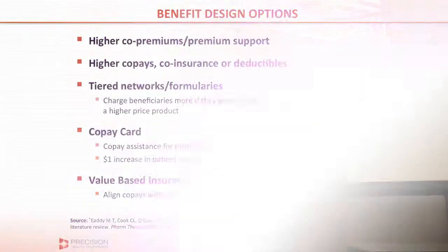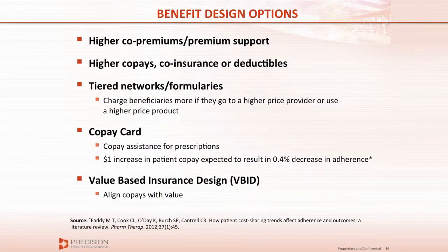Now let me switch gears from a supply-side intervention to something on the demand side — benefit design. Benefit design has many different flavors. It ranges from premium support — subsidizing coverage for people who can't afford an insurance premium of $10,000 for a family — to simply raising co-payments, co-insurance, and deductibles. There are also tiered networks, which are very popular in Massachusetts. Plans have taken providers and put them into different tiers, where the most expensive providers tend to be in the top tier, so you pay more to go to them but are not excluded.